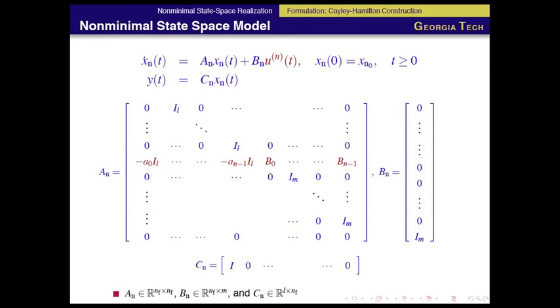The problem is, by the way, this is the unknown part. The rest is known. The problem here is this is not exactly an equivalent input-output map because it maps the nth derivative of the control signal to the output, so I need to do something with that.